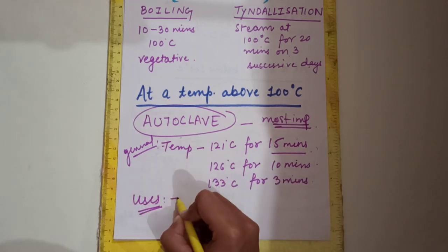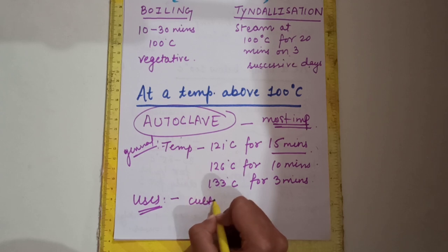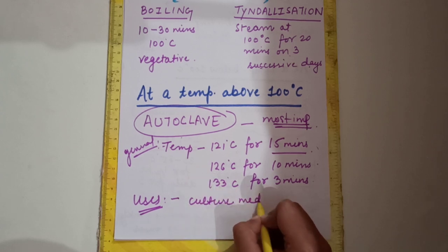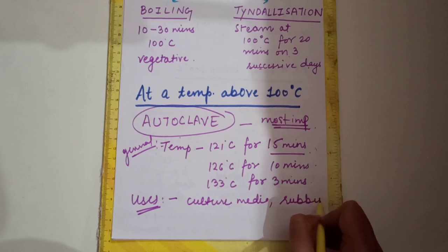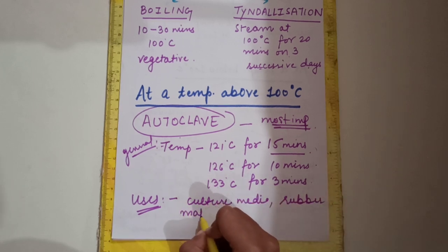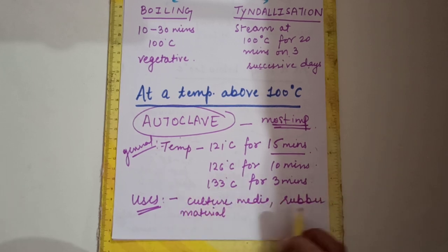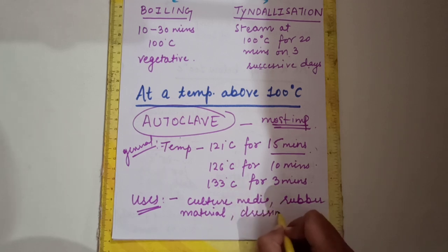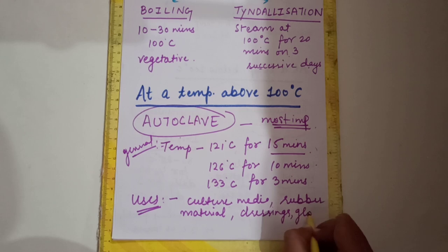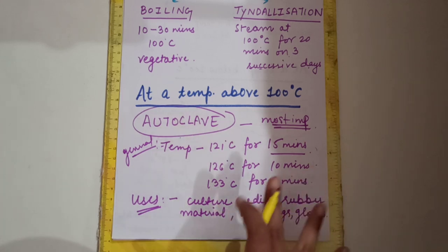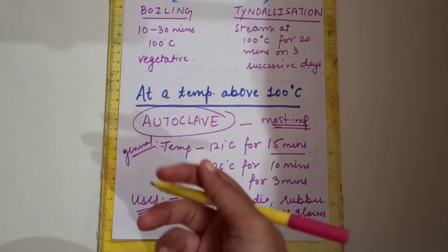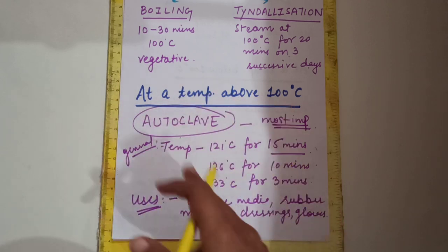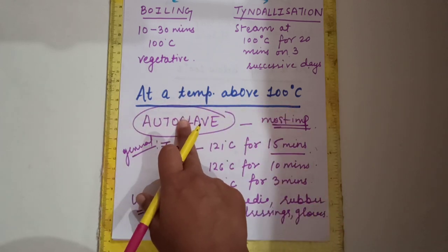As for uses of autoclave: culture media, rubber material — unlike the hot air oven where rubber melts, in autoclave rubber material can be sterilized — dressings, and gloves can all be sterilized. Basically, items that cannot withstand the high temperature of the hot air oven are sterilized in the autoclave.